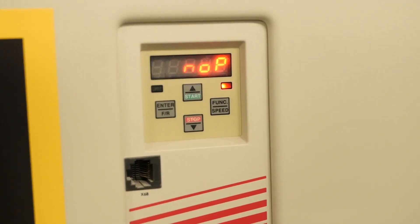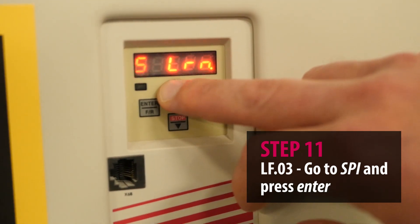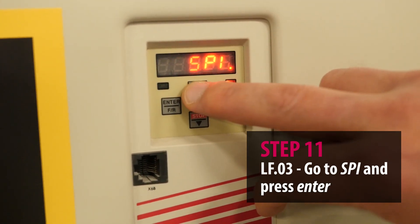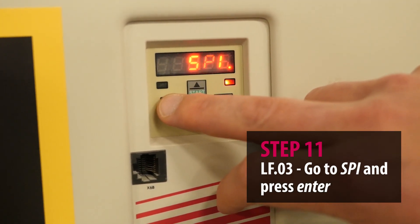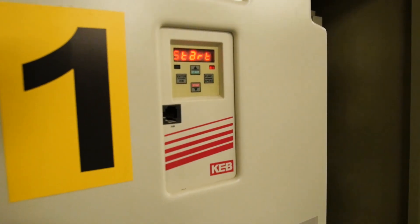To do the SPI learn, you navigate to parameter lf3, set it to SPI, and press enter. It'll display start. From there you have to go down to the controller and give it the inspection command.